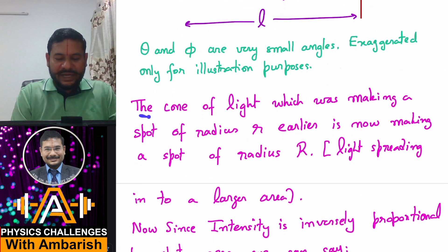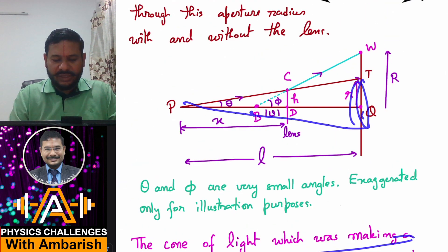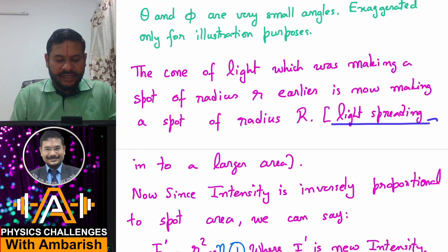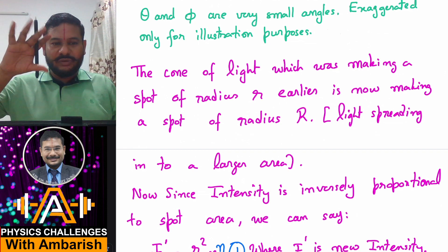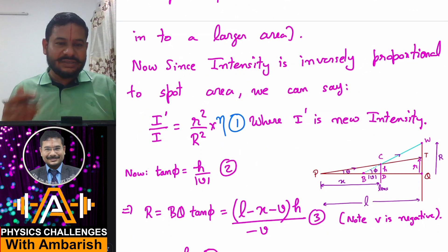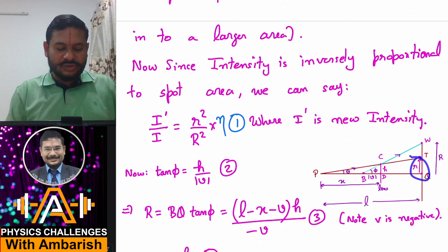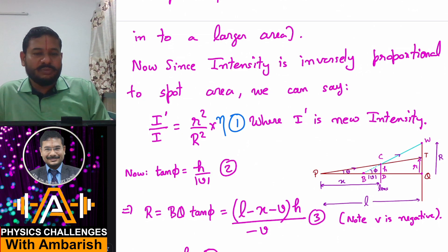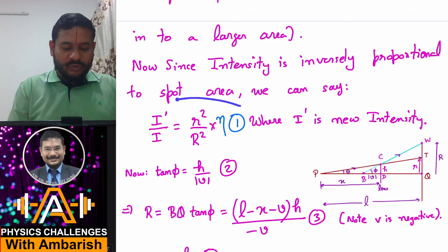Now the cone of light which was making a spot of radius r earlier is now making a spot of radius capital R. There was a cone of radius smaller and now we have a cone of radius capital R. Light is spreading into a larger area. Now since the intensity is inversely proportional to the spot area, because the total energy is the same but now it's spread over a larger area, we can say that I' upon I is simply r² upon R² times eta, where I' is the new intensity and I was the earlier intensity. This is because area is proportional to radius squared. The eta factor multiplies because the transmissivity of the lens is eta.